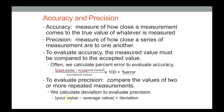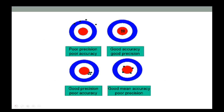Deviation uses absolute value because we only care about the magnitude — not whether it's positive or negative.